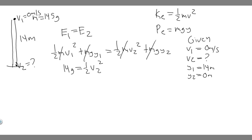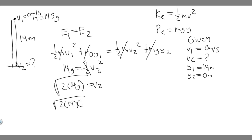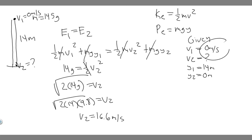We're trying to solve for V2. Multiply both sides by 2 to get rid of the ½: 2 × 14g = v₂². Then square root both sides: v₂ = √(2 × 14 × 9.8). Taking out your calculator and computing the square root of 2 × 14 × 9.8, you get V sub 2 equals approximately 16.565, which we round to 16.6 meters per second. So the speed for Part A, ignoring air resistance, is 16.6 meters per second.